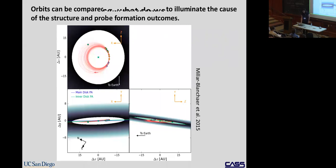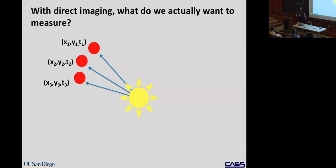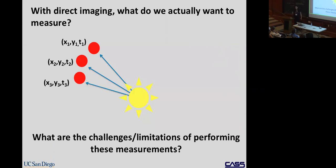Now I'll talk about what we actually want to measure and how we do it. You have a bright star as your reference frame center, then you measure a companion in the field of view, getting position X and Y as a function of time. To confirm common proper motion or get orbits, you need multiple epochs over time. If you're lucky, you'll see the companion moving with the star and tracing out its orbit.